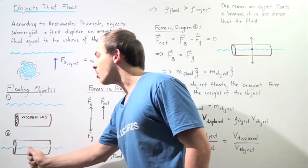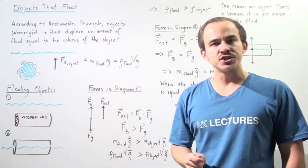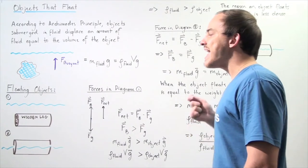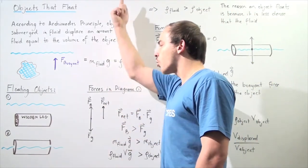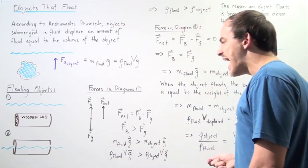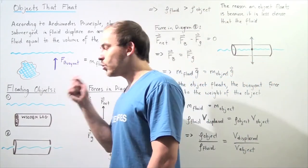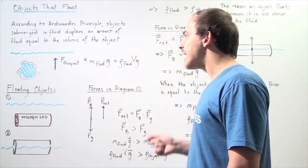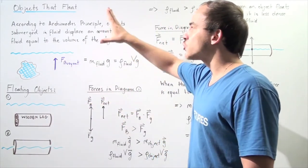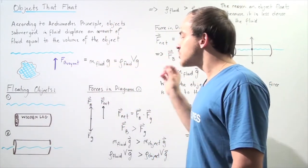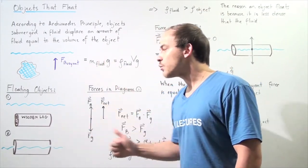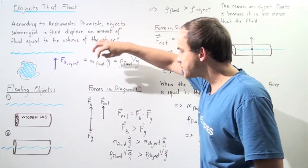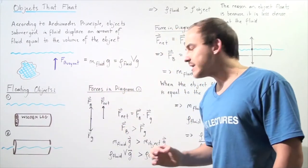Right at the moment of release, the object begins to accelerate upward. According to Newton's second law of motion, the object has a certain acceleration, which means it has a net force that points upward along the y-axis. There are two forces acting on the wooden log: the force of gravity, which points downward, and the buoyant force Fb, as described by Archimedes' Principle. Because the net direction of motion is upward, the buoyant force must be greater than the force of gravity.